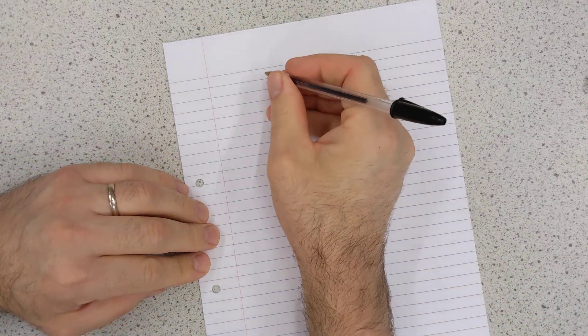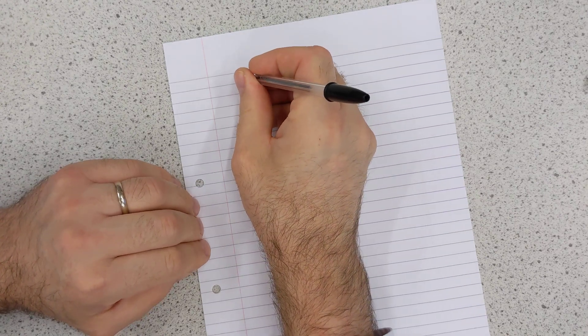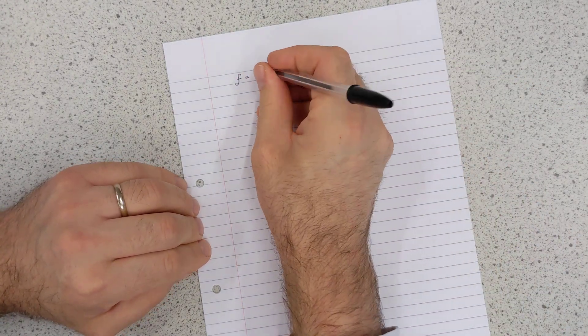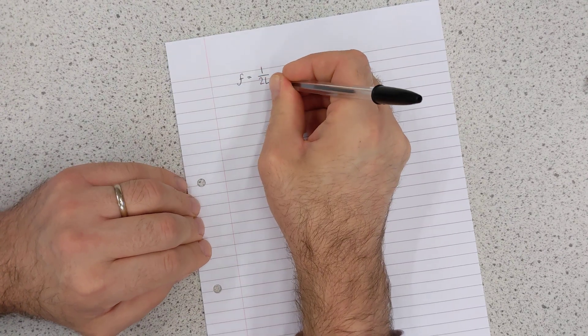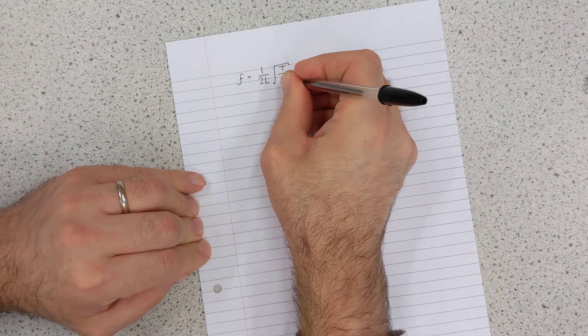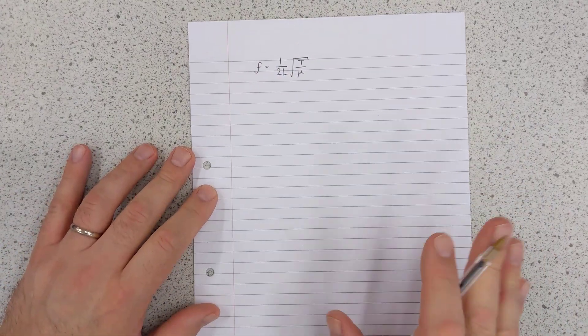This is a derivation I think all A-level students ought to know. You know the equation f, the frequency of the first harmonic, is equal to 1 over 2l multiplied by the square root of t over mu. But where does that equation come from?